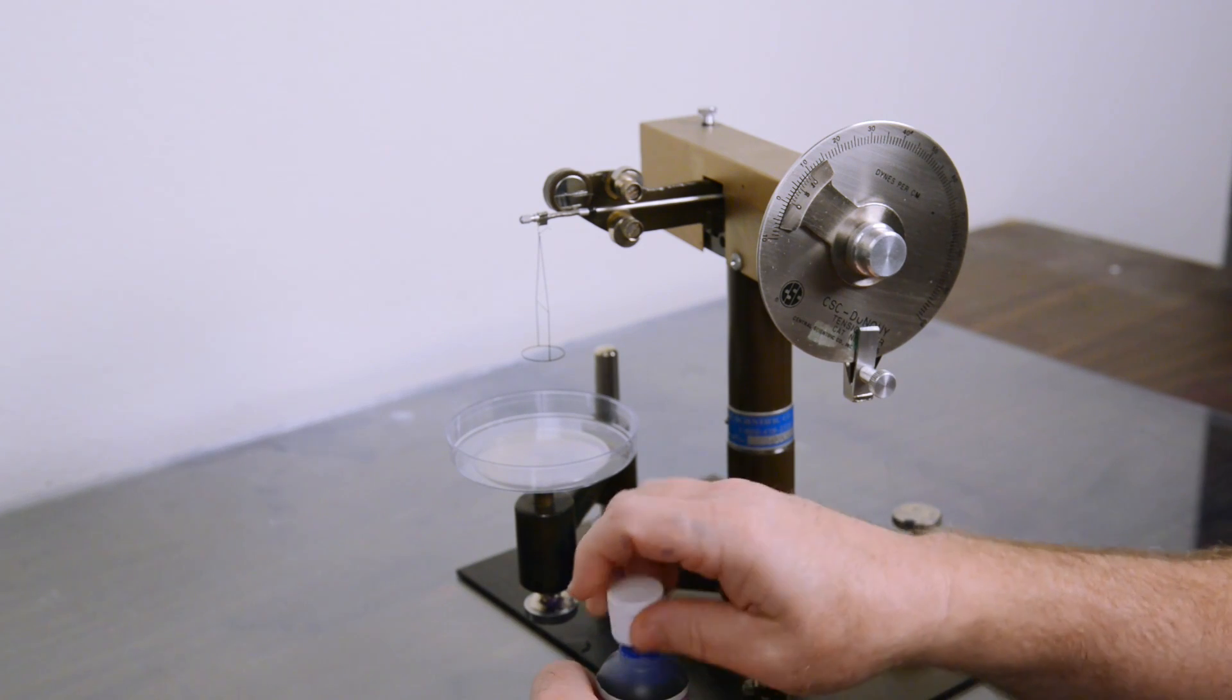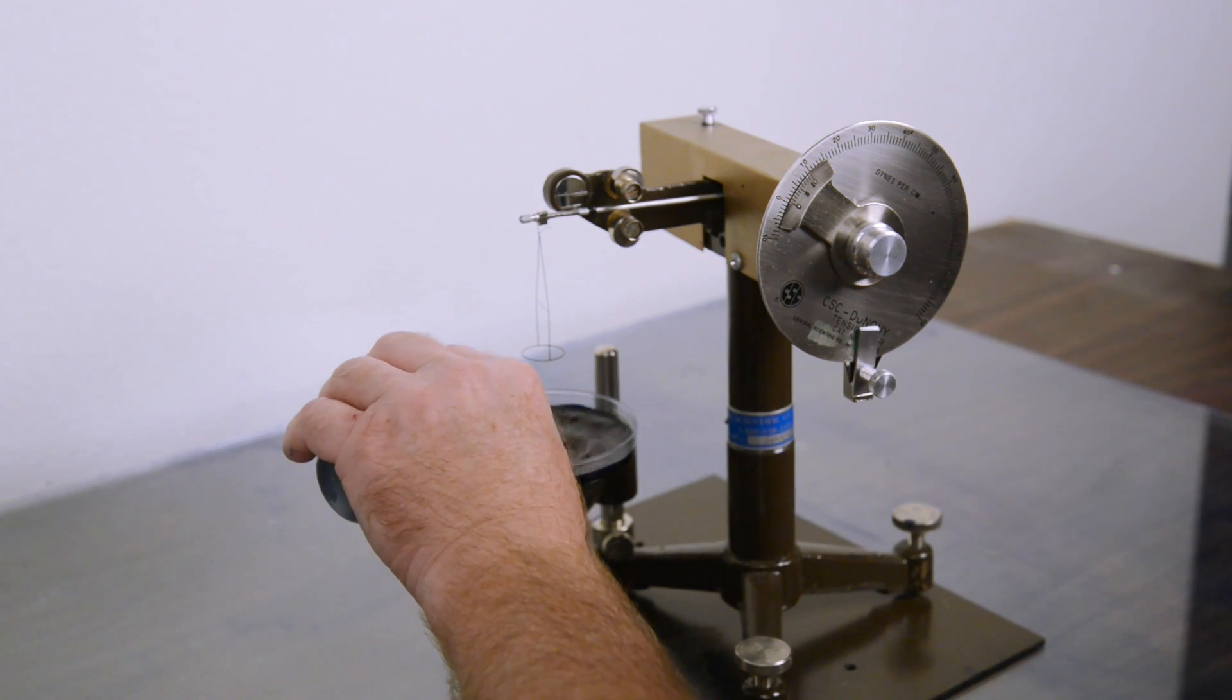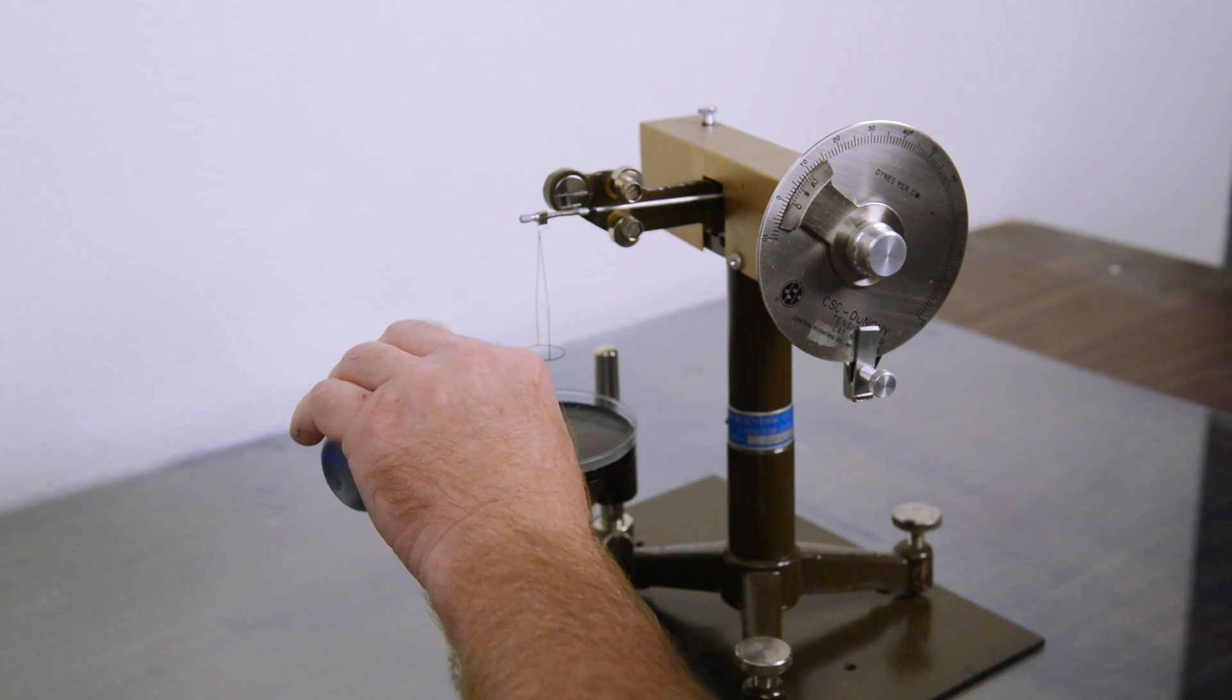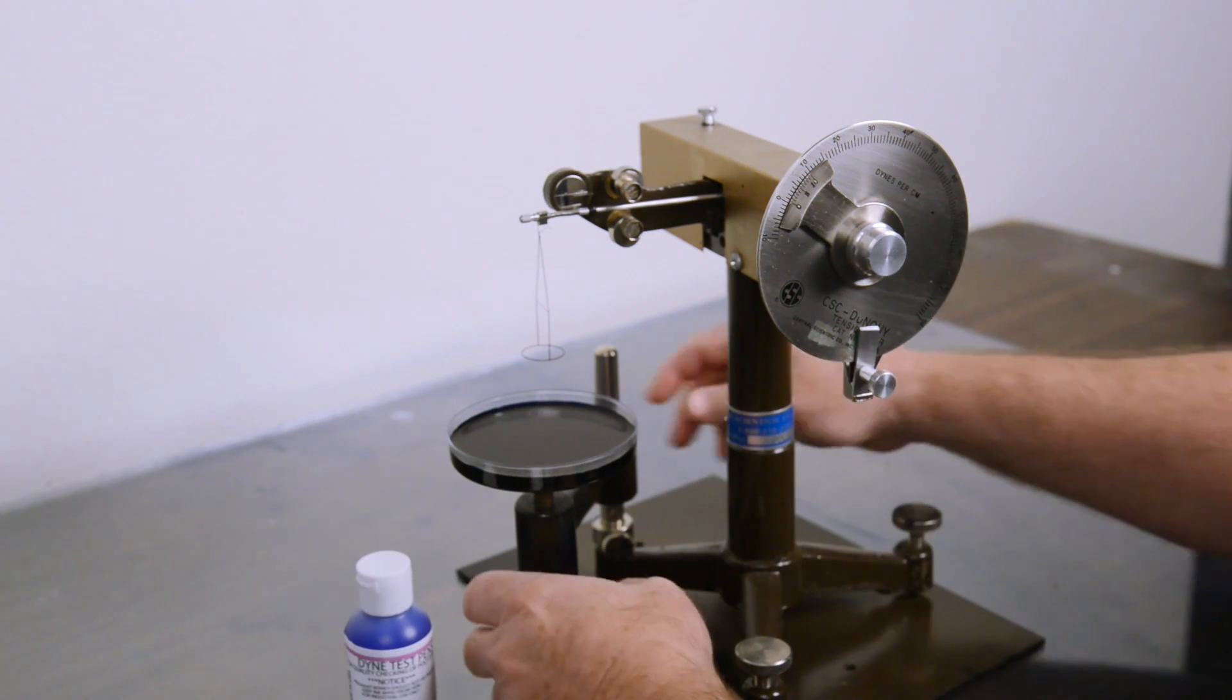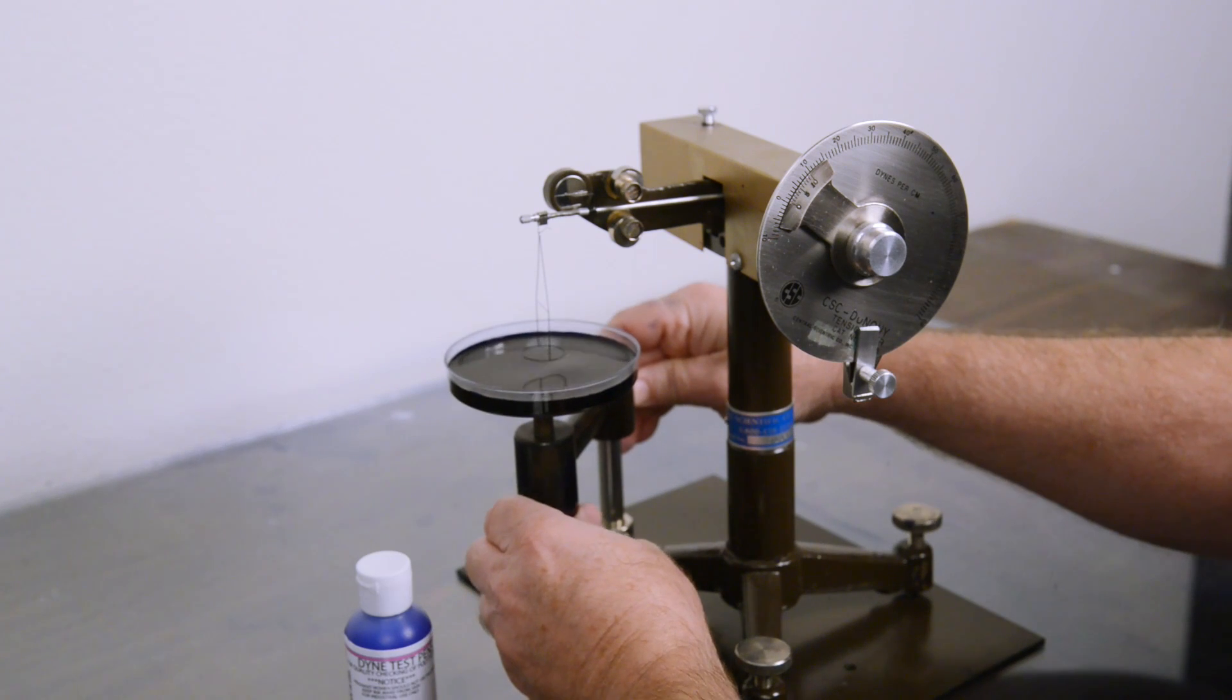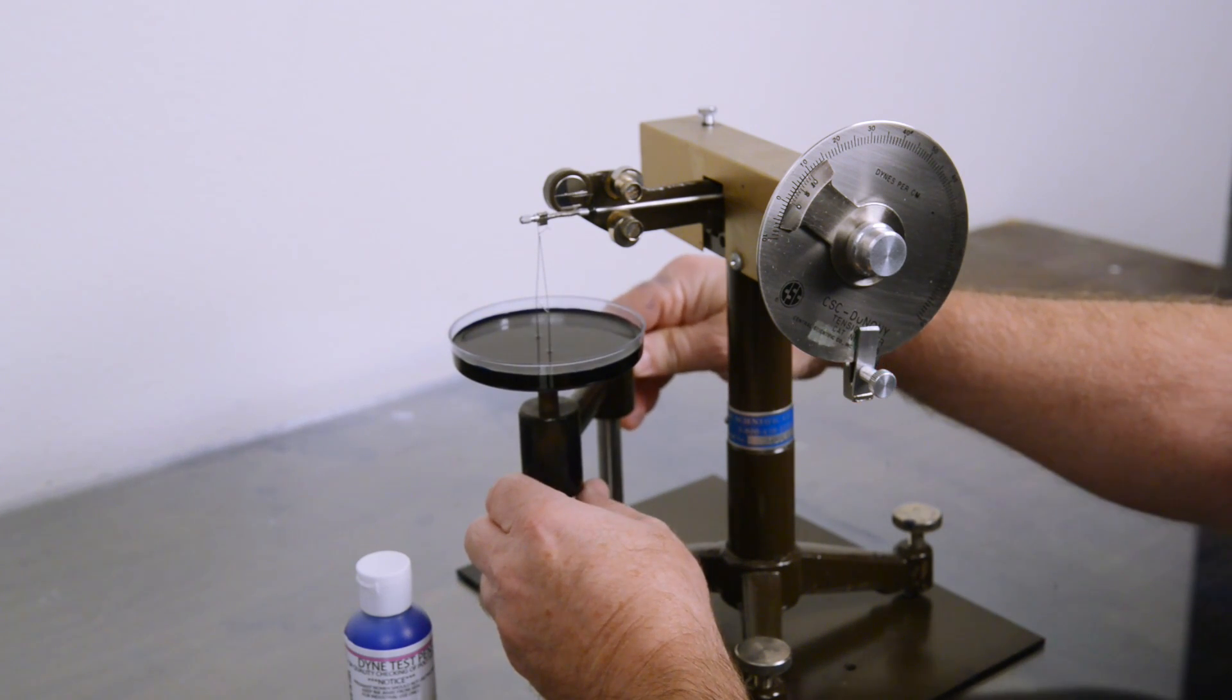We are going to pour the ink solution into the petri dish so it is just below the level line, put it aside, and adjust the arm so that the ring is just below the surface of the ink.